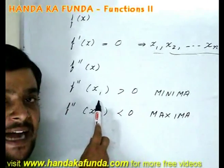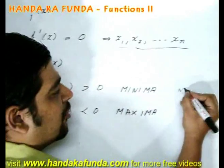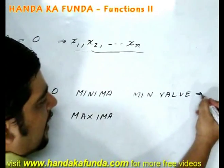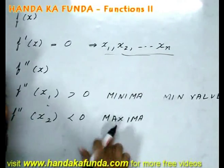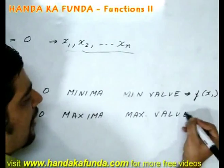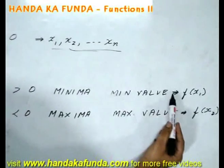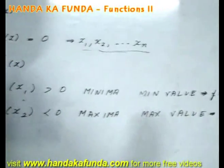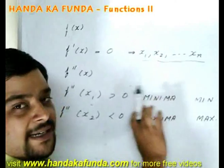But are these the minimum or the maximum values? No. x1 is the point at which the minima occurs. But to find out the minimum value of the function that is going to be f of x1. Very similarly, x2 is the point at which the maxima occurs. To find out the maximum value I will have to do f of x2. Please do note that these minimum value and maximum value are different from the global minima or the global maxima.